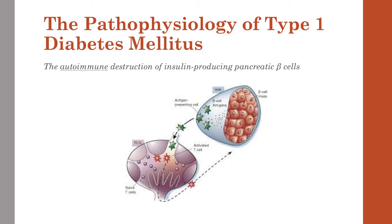This process is marked by the development of islet-reactive autoantibodies, which precedes the development of autoreactive T cells capable of destroying those beta cells, resulting in a progressive and predictable loss in insulin secretory function. The beta cell function decreases over time, leading to overt diabetes, which is expressed diabetes.